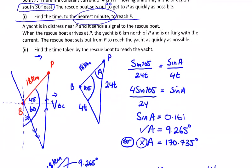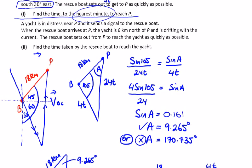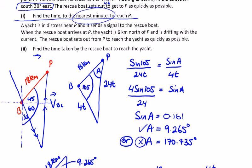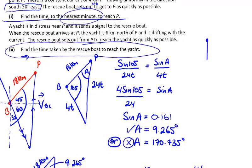There's another part to this question. A yacht is in distress near P and it sends a signal to the rescue boat. When the rescue boat arrives at P, the yacht is 6km north of P and is drifting with the current. The rescue boat sets out from P to reach the yacht as quickly as possible. Find the time taken by the rescue boat to reach the yacht. So the boat gets to P, the boat is here and the yacht is up here 6 kilometers away. If there was no current at all it would just go straight up and get there, but the fact that the current is moving in this direction, it's going to affect the boat and the yacht exactly the same. So this question is actually straightforward enough.